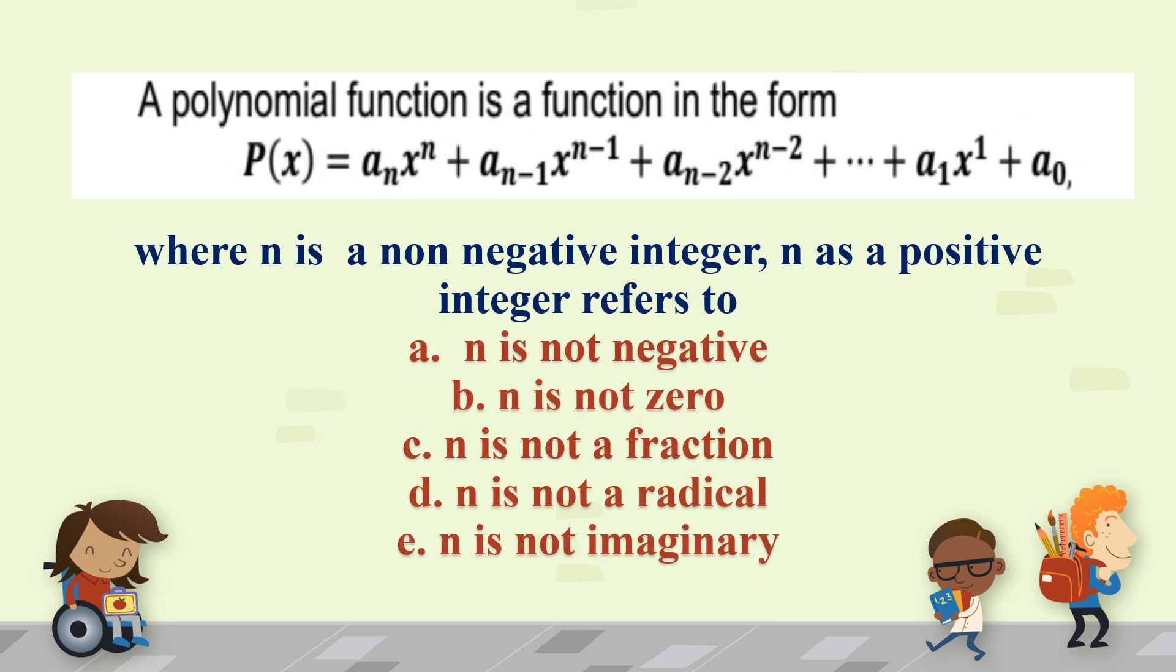A polynomial function is a function in the form where n, that's your exponent, is a non-negative integer and n, as a positive integer, refers to letter a, n is not a negative number. So negative exponents are not allowed. Letter b, n is not 0.